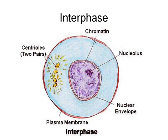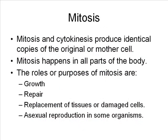During interphase, the nuclear membrane of the cell is clearly visible. However, the chromosomes cannot be seen because the DNA is in an unwound form called chromatin. Also not visible are the spindle fibers, which will play an important role in mitosis later on. Together, mitosis and cytokinesis produce identical copies of the original or mother cell.